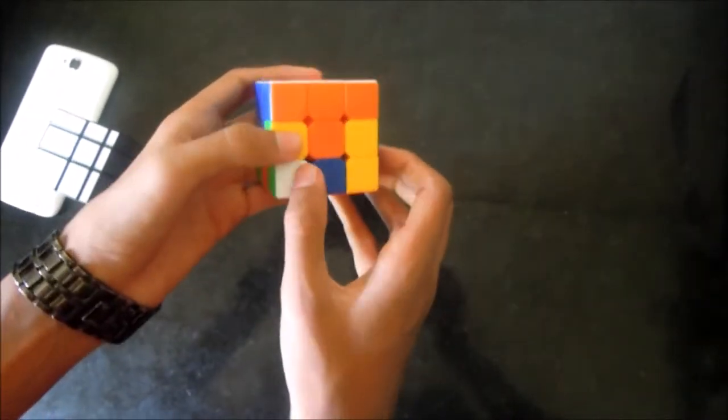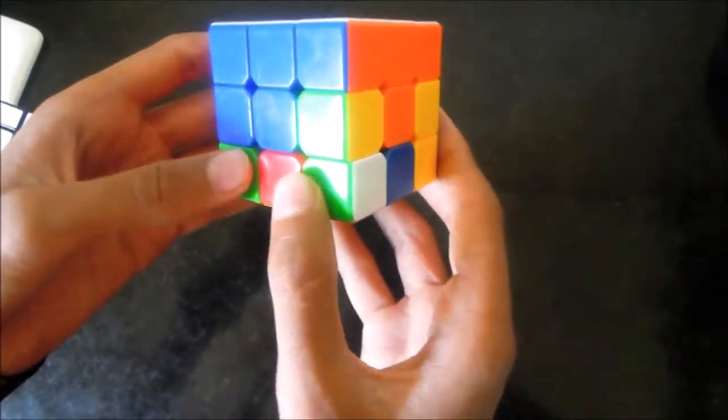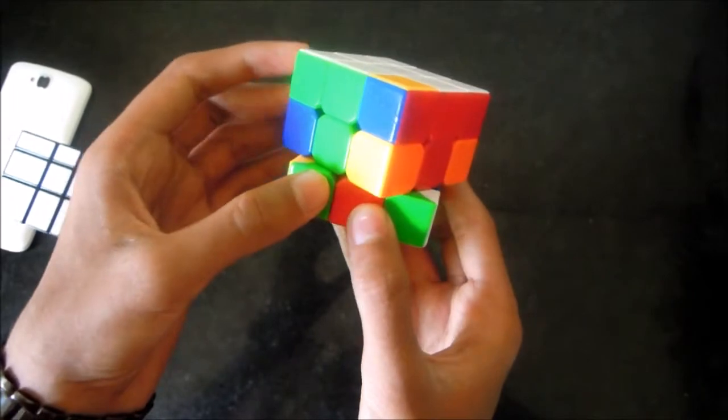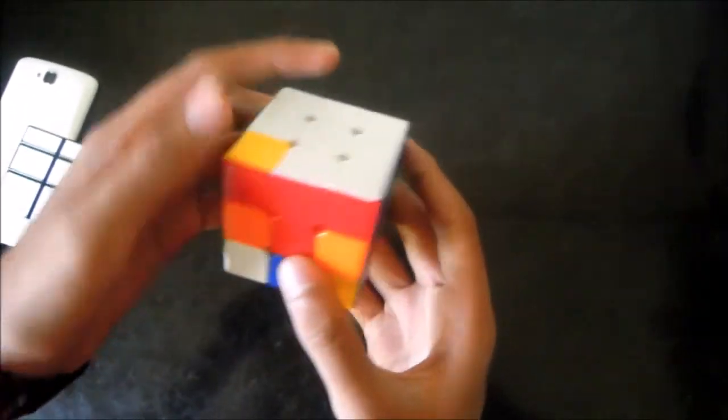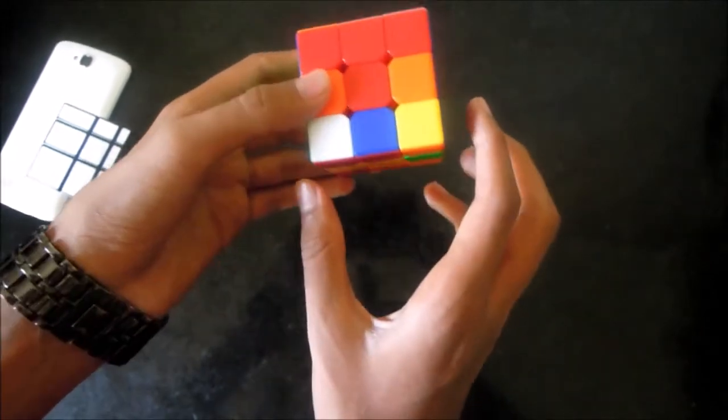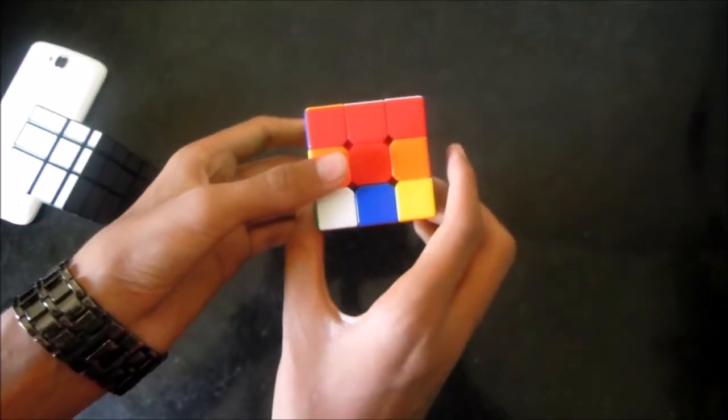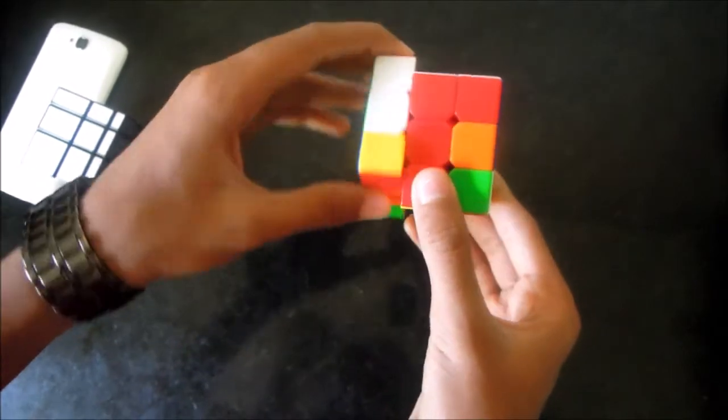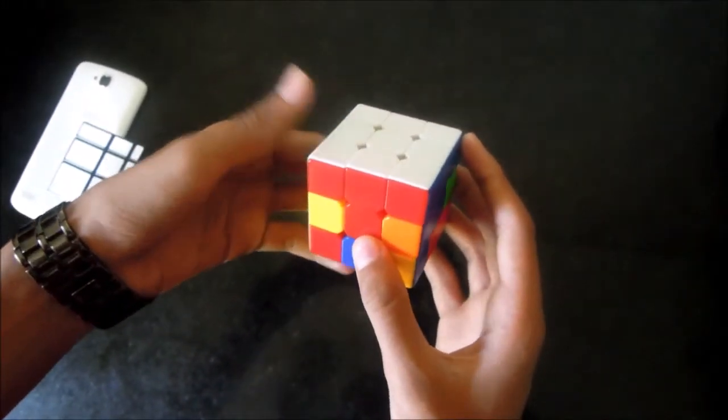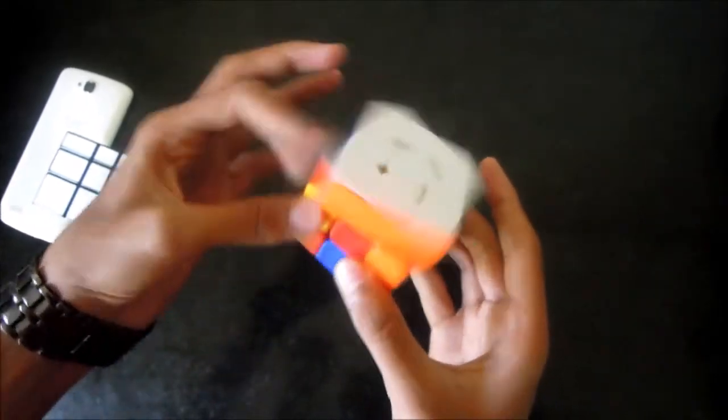Now this piece. White, green and red. Take it towards the white, green and red. It is in left. Take it towards the right. Place it down. And move it back. And put it up. So the first layer is ready.